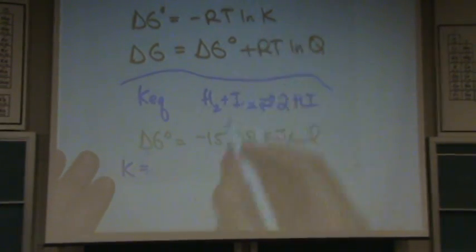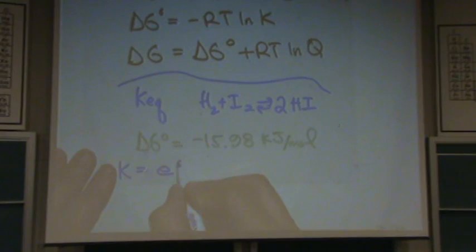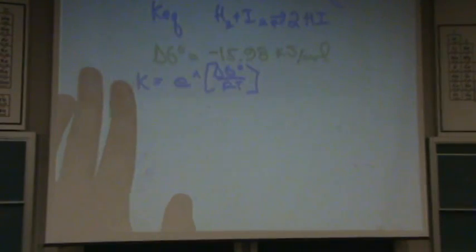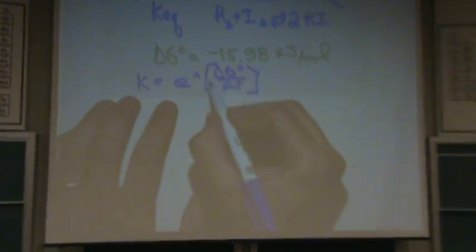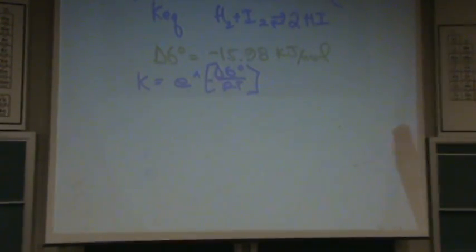So K, solving for K from that above equation, it's E raised to the delta G standard divided by RT. Did I forget it? I forgot my minus sign. Minus.